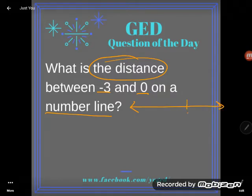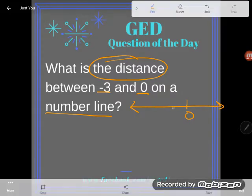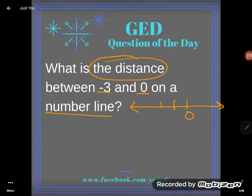You know, here's zero on a number line. And if I wanted to get to negative three, I'd go off to the left. One, two, three units. That'd be negative one, negative two, negative three.